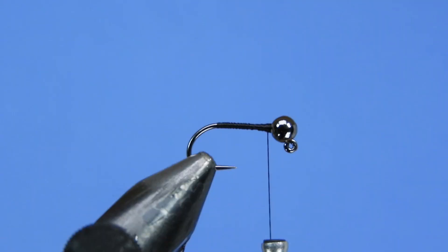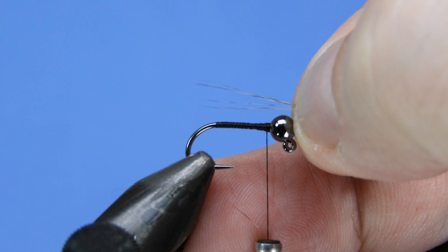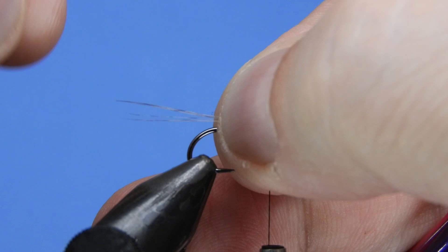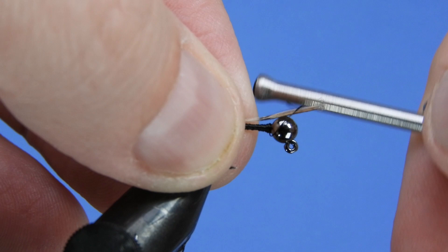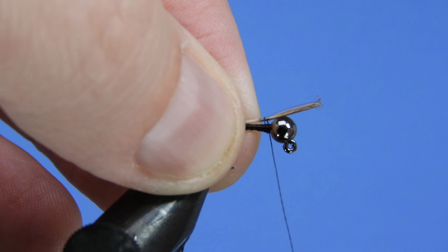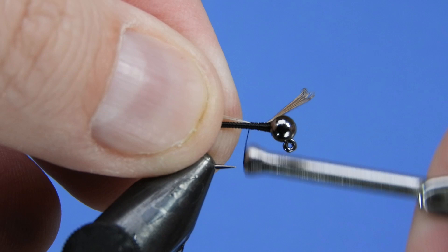Take a little bit of Coque de Leon. This is a dark Pardo, one of the Whiting capes that I've got there. Measure out our tail. Probably could have scaled back a little bit, but I don't mind the longer tails on these. I know some folks prefer a fairly short tail, so if that's you go ahead and shorten that up a little bit. We're going to just tie that down along the spine of the hook shank.